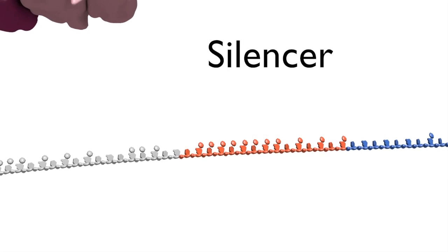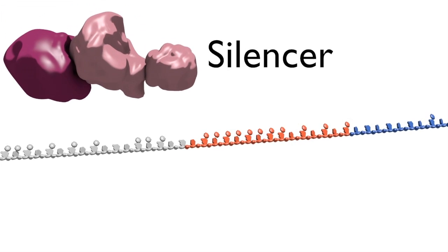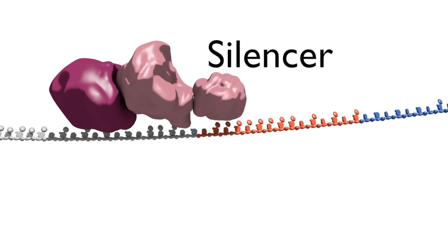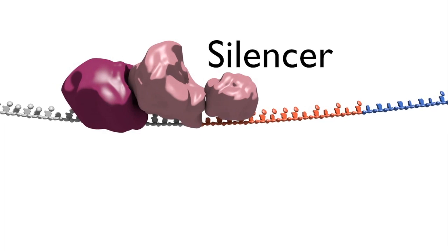Intronic and exonic splicing silencer sequences have the opposite effect, often masking splice sites or blocking spliceosome assembly, thus causing exons to be omitted from the mature mRNA.